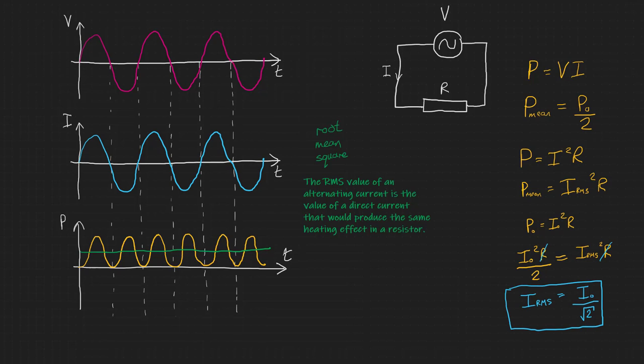So the RMS current can be calculated from the peak current simply by dividing by root 2. We can do a similar derivation using P equals V squared over R to demonstrate that the RMS voltage V RMS is equal to V0 divided by root 2. And to check this,